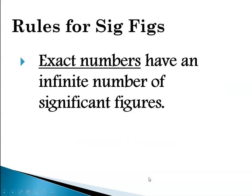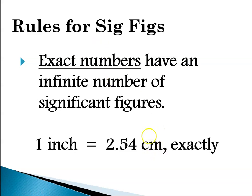Finally, exact numbers are said to have an infinite number of significant figures. For example, if there are 13 people in a room, that count is an exact number with infinite sig figs. Also, conversion facts like 1 inch equals 2.54 centimeters, or 12 inches equals 1 foot, are exact numbers and are said to have an infinite number of significant figures.